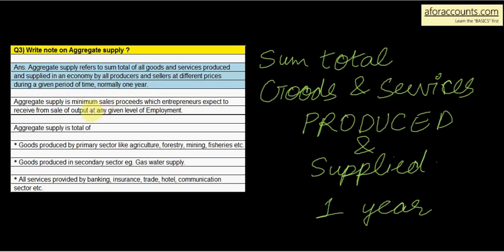Aggregate supply is the minimum sales proceeds which an entrepreneur expects to receive from the sale of output at a given level of employment. At a given level of employment, the sales proceeds must be at least this much — that much money should be received from those sales.